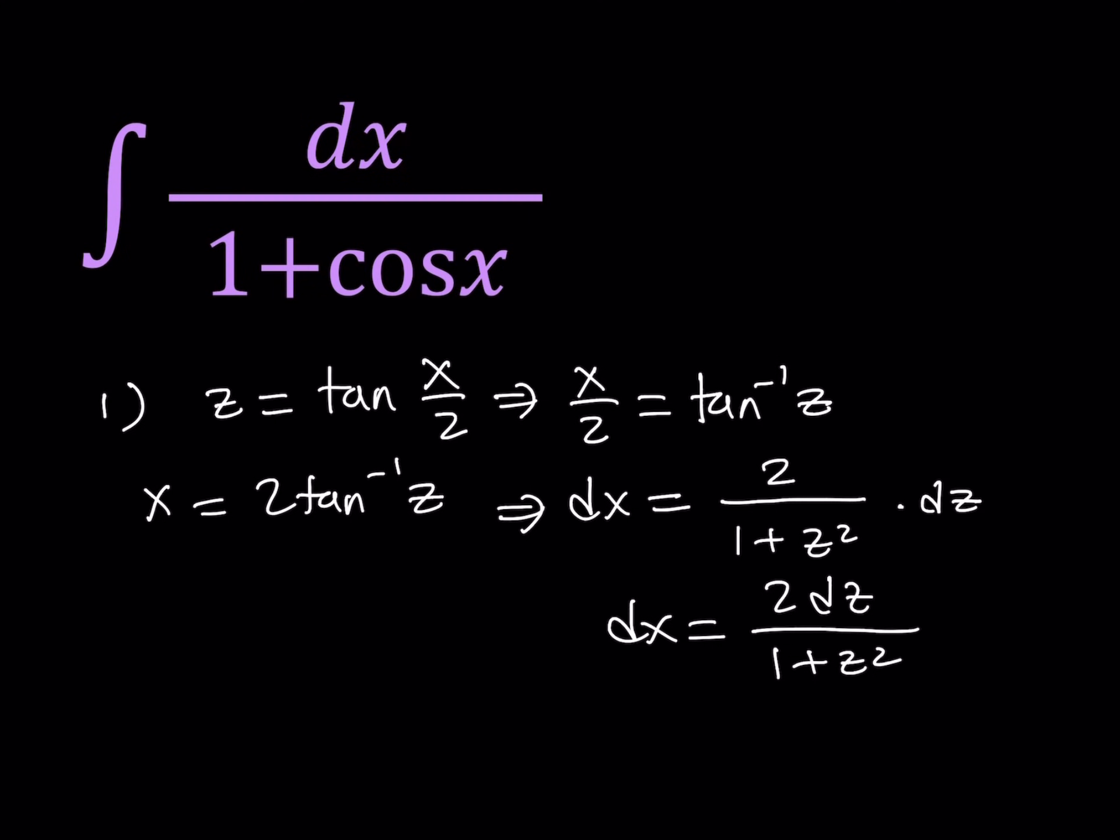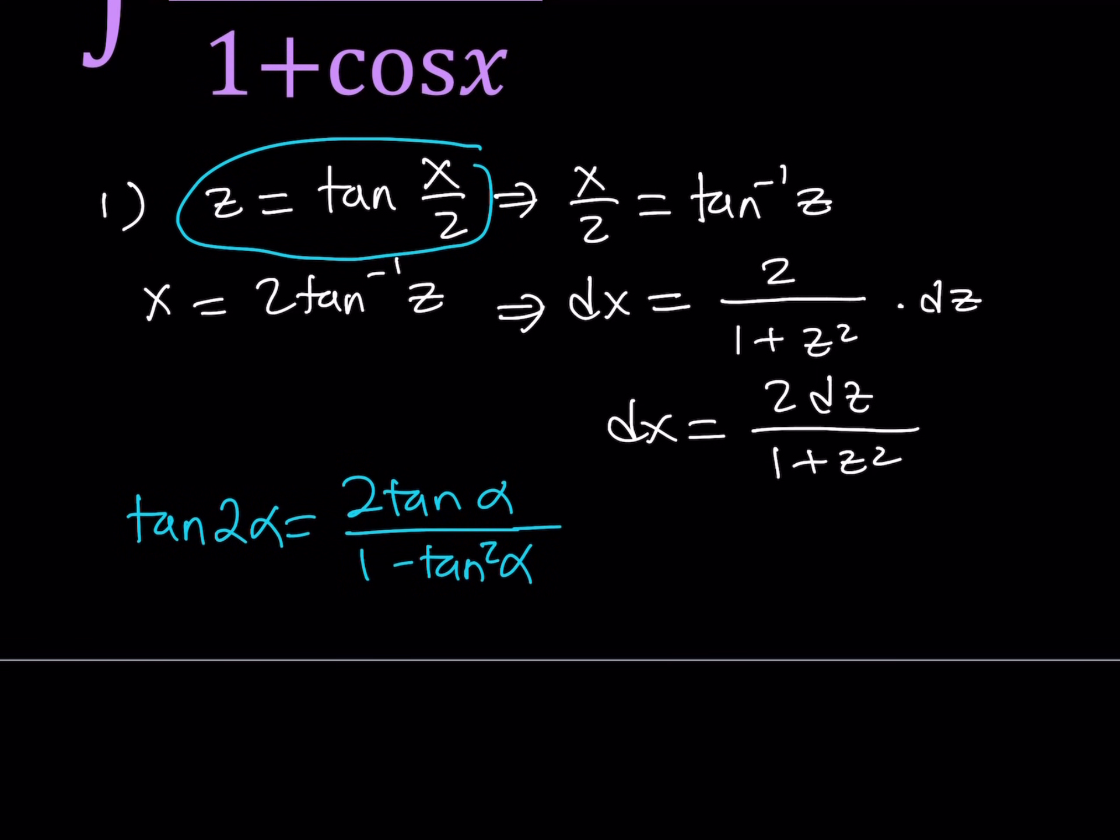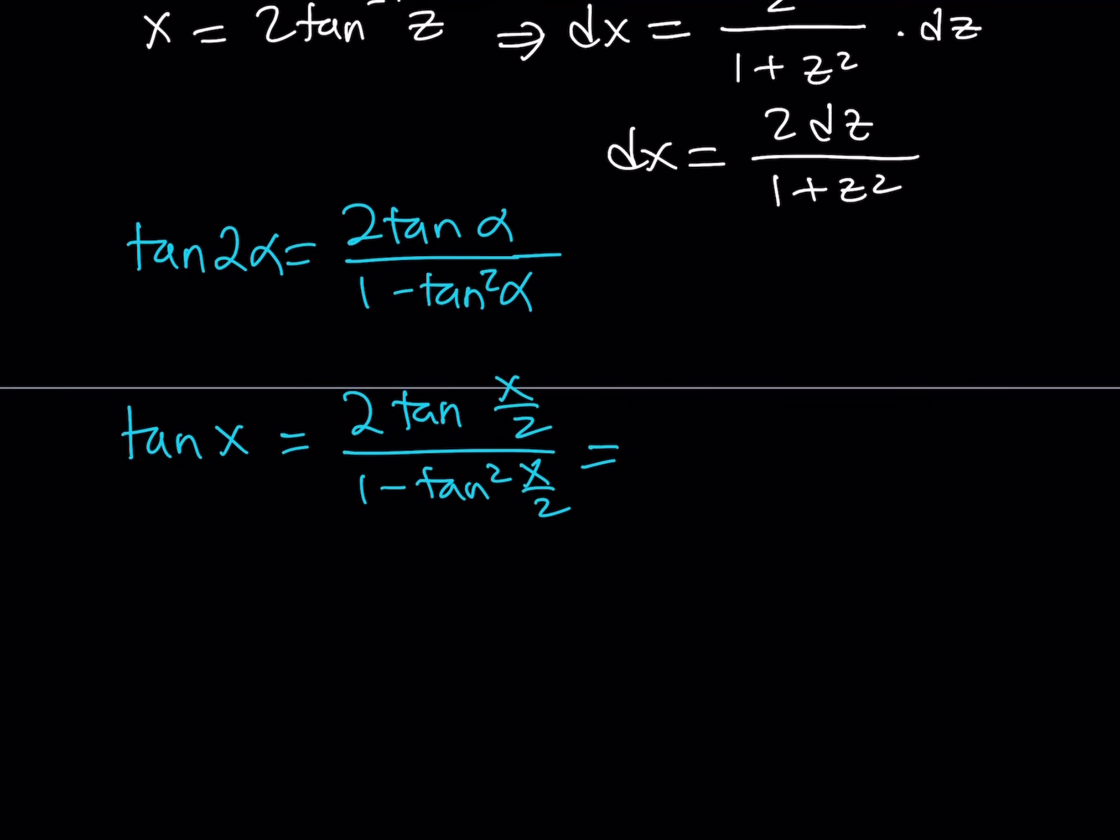But that's not all I need. Since I want to get to cosine x, I could use the double angle formula, but I just want to find tangent x first because it's fun. Since tangent x over 2 equals z, remember the formula for tangent 2 alpha? It is 2 tan alpha over 1 minus tan squared alpha. So tangent x is 2 tan x over 2 divided by 1 minus tan squared x over 2, which equals 2z over 1 minus z squared.